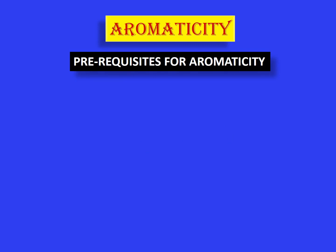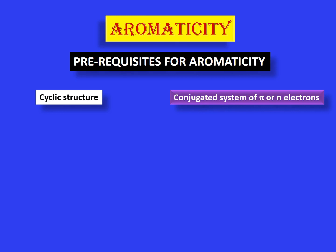First, it should have a cyclic structure, meaning its structure must have a ring system. That ring must have conjugated electrons, and these conjugated electrons may be pi electrons or non-bonding electrons. You can find more about conjugated systems in a video we have already recorded — the link is here. The third requirement is that the cyclic structure or ring must be absolutely planar.